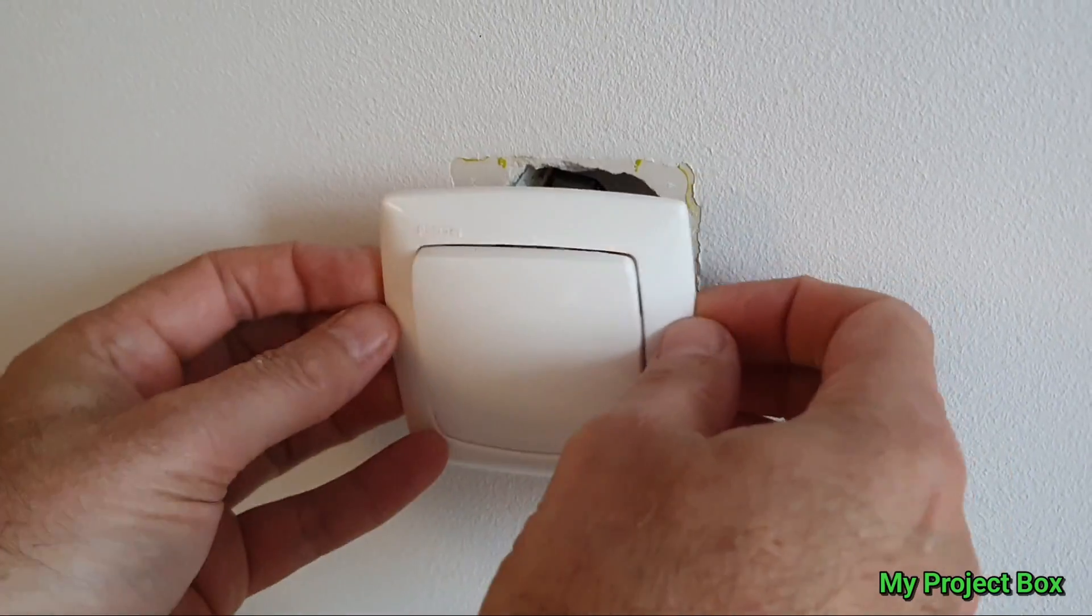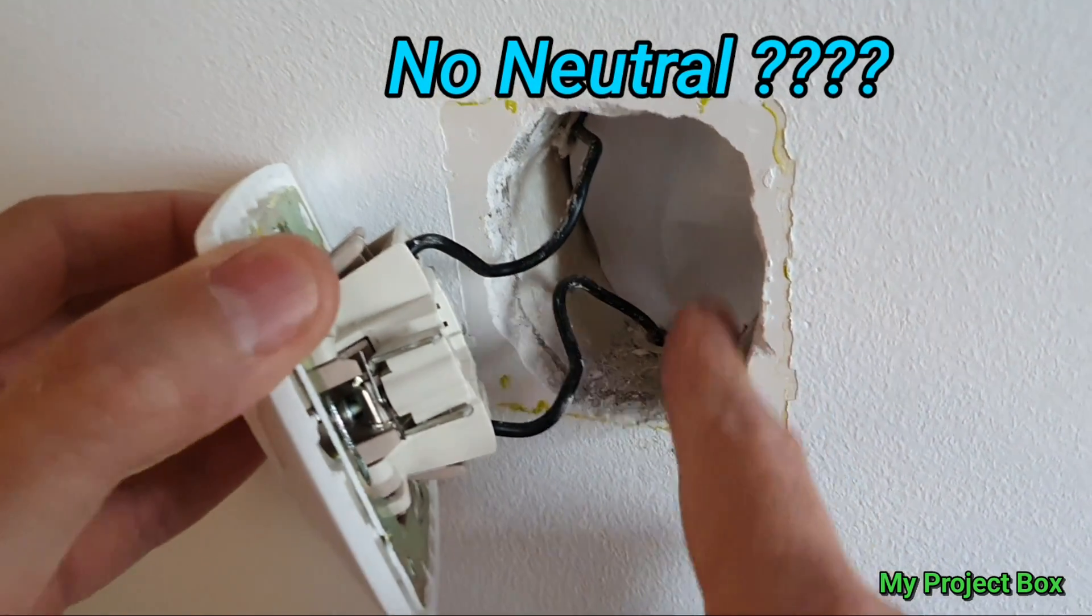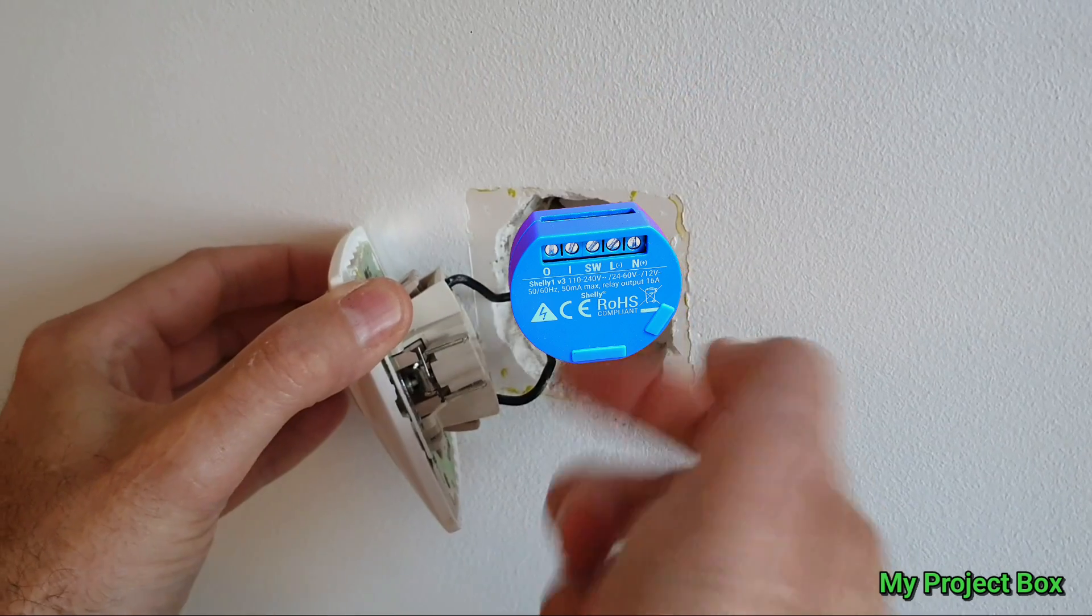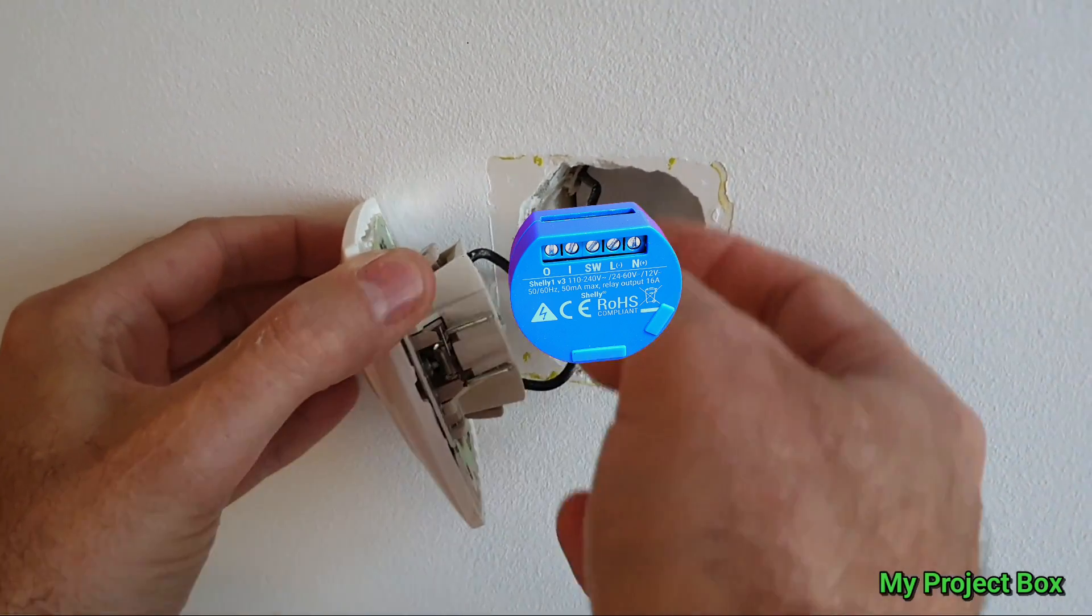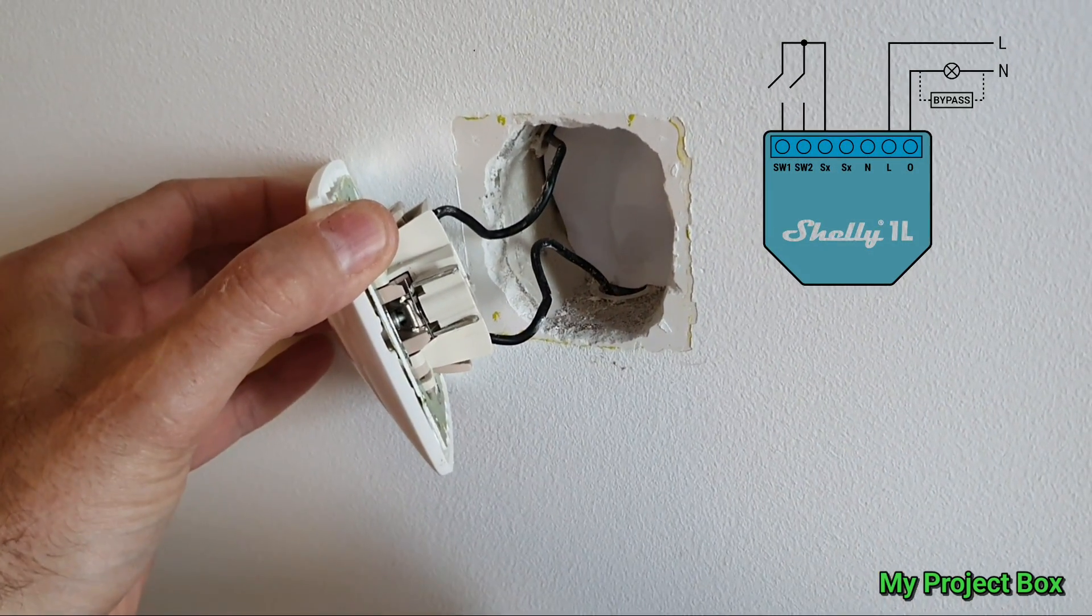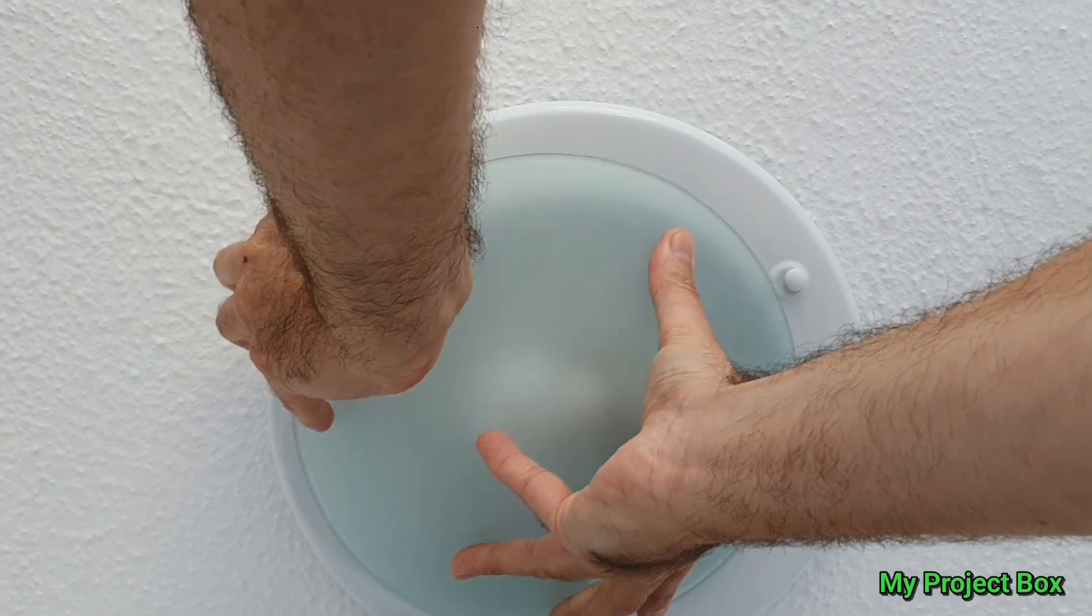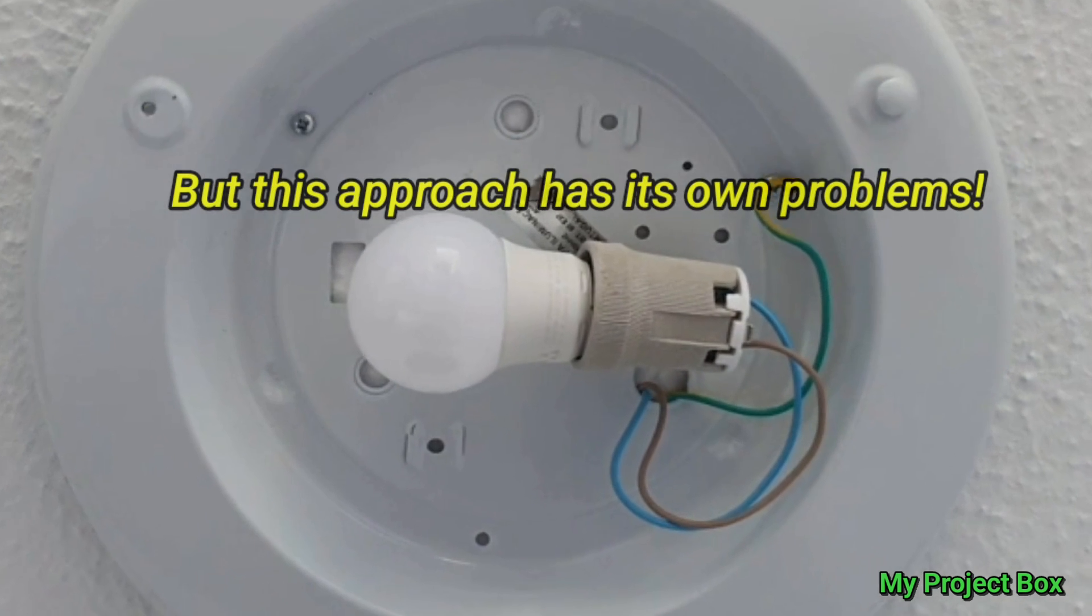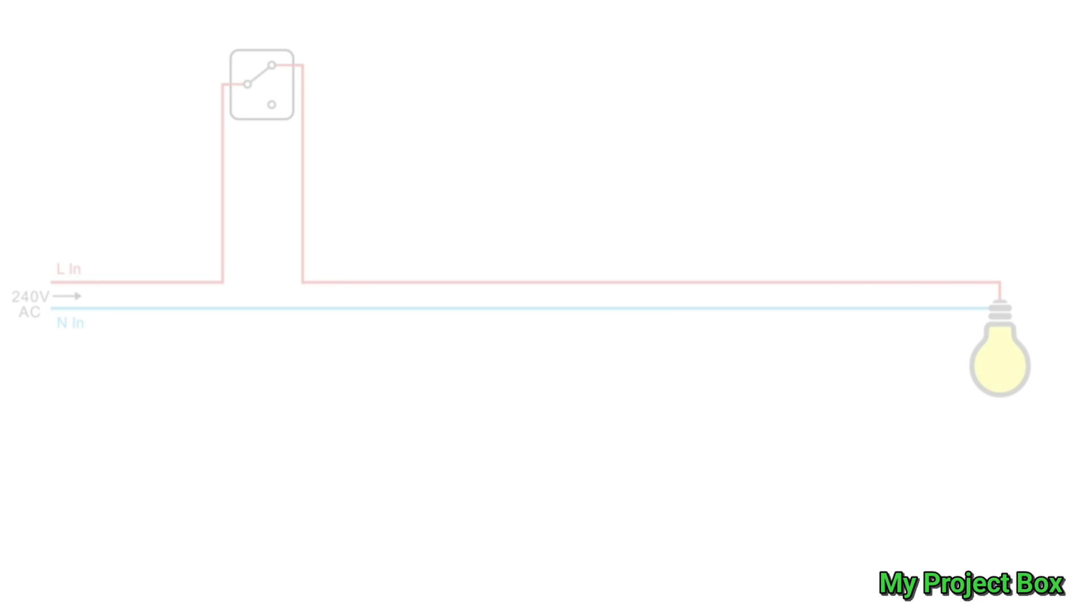So my first thought was take a look behind the light switch and see what we've got. And surprise surprise there's no neutral behind the light switch which is a problem because the Shelly 1 requires a neutral to function. Now I believe there is a version called the Shelly 1L that can operate without a neutral but I've only got the Shelly 1 so I need to find a way around this problem. So I was thinking to somehow stick it by the light fixture itself, just cut the two wires that go to the light bulb and splice the Shelly 1 in between.